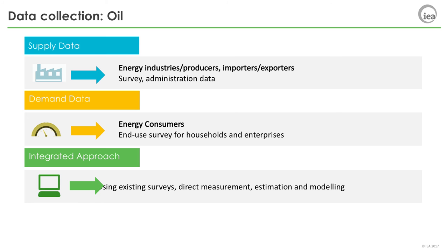To have a full picture of oil supply and demand statistics, an integrated approach needs to be used. This involves using existing surveys, direct measurements and administrative data, and complementing the existing data with estimation and modeling tools to fill the gaps in the dataset or account for missing or misrepresented statistics. These methods must be adapted to the changing production and consumption patterns. For example, oil products mainly used in transport may be distributed by a single nationally regulated company or they may have many distributors in a liberalized market — the collection methods will differ in these two cases.